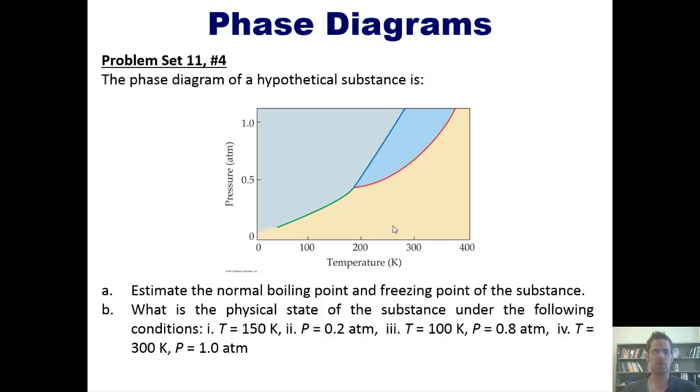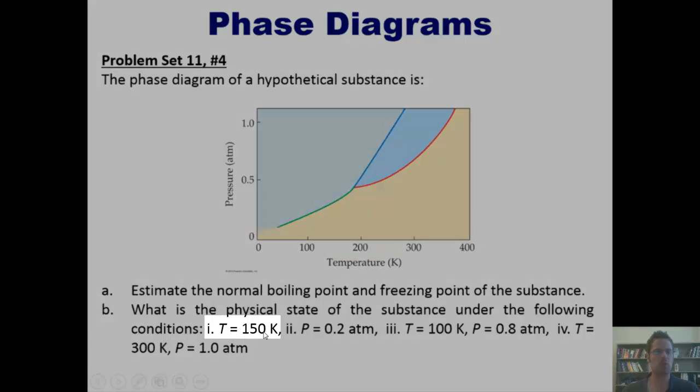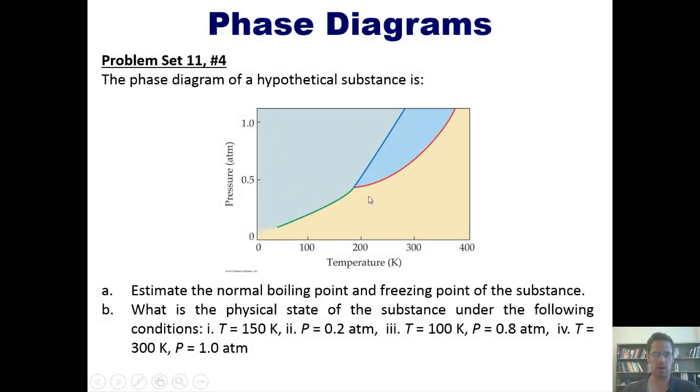In question B, it asks us to identify the physical state, either liquid, gas, or solid, under the following conditions. The first one says a temperature of 150 Kelvin. Let's find where 150 Kelvin is on this phase diagram. It appears right here. As you trace up 150 Kelvin, you'll see that the substance is either going to be a gas or it's going to be a solid, depending on what the pressure is.